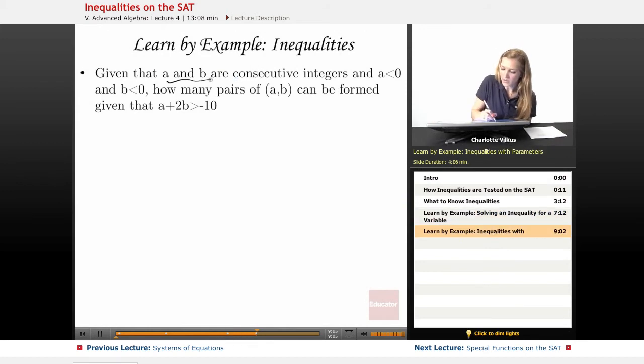We're given some parameters. So we're given that A and B are consecutive integers and A is less than 0 and B is less than 0.